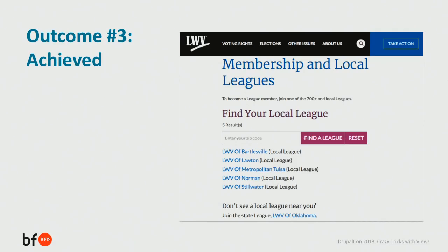Now we've achieved outcome three. This is really important because we could give the user the standard 'no results' text, but we're giving them something more useful. They're looking to join a local league, and there might not be one in their zip code, but there are other local leagues in the same state that might be close to them. Or they could also join their state league.